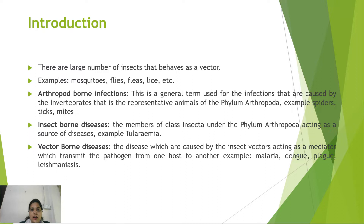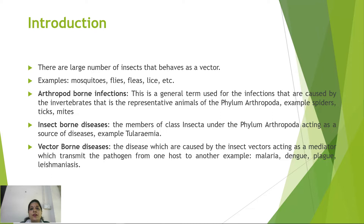Insects that cause and transfer diseases are known as vectors. There are arthropod-borne infections, in which members of the phylum Arthropoda cause diseases, like spiders, ticks, and mites. Insect-borne diseases are those in which members of the class Insecta act as sources of disease — for example, tularemia. Vector-borne diseases specifically involve insect vectors that act as mediators transmitting the pathogen from one host to another.